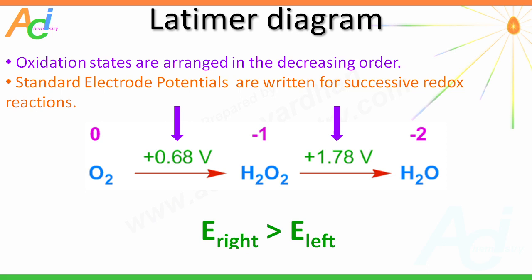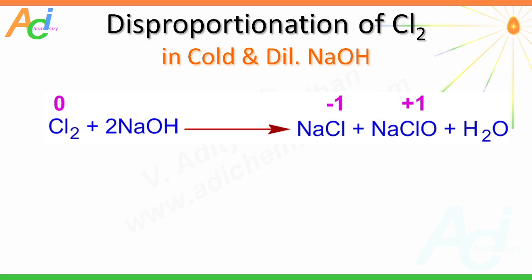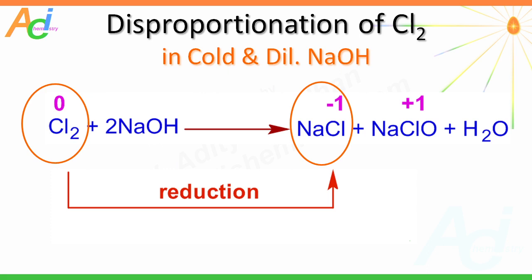Let us see one more example of disproportionation. The halogens, except fluorine, can undergo disproportionation in alkaline medium. One such example is when chlorine gas is passed through a cold and dilute sodium hydroxide solution — it disproportionates to sodium chloride and sodium hypochlorite. In this reaction, chlorine in the 0 oxidation state is reduced to the –1 oxidation state in sodium chloride, and simultaneously oxidized to the +1 oxidation state in sodium hypochlorite.